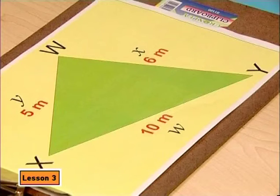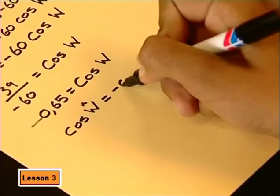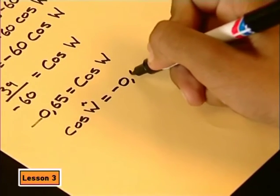But how do we work out a negative angle? Remember, cos is negative for obtuse angles. Have a look at angle W. It's obtuse, so we can expect a negative value. Fortunately, your calculator will deal with this anyway. Try it.